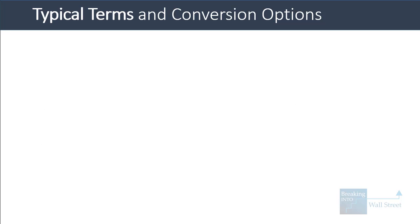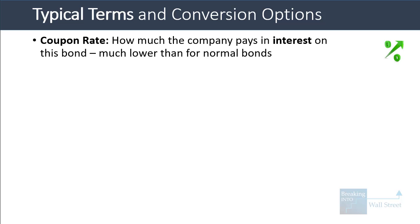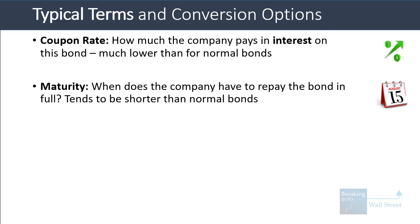Let's get started with the typical terms and conversion options. The coupon rate attached to a convertible bond is just how much the company pays in interest on this bond on an annual basis. This is much lower than it is for normal bonds because convertible bonds have the conversion option, which adds a lot of value. So if a normal bond has a coupon rate of 4 or 5%, a convertible bond might have a coupon rate of 0, 0.5%, or 1%.